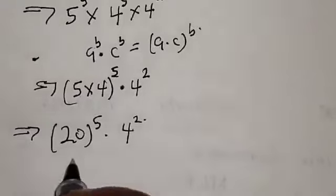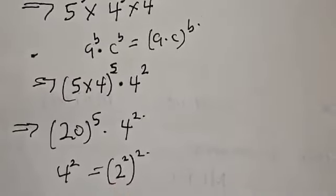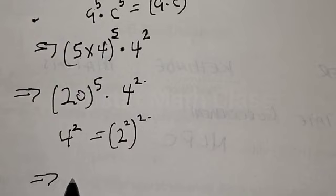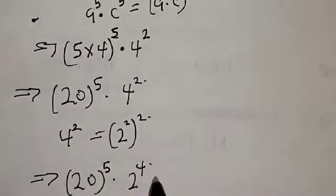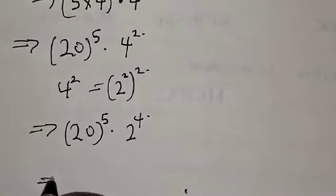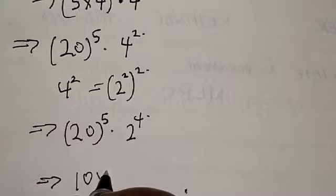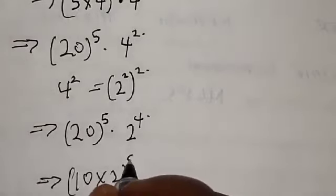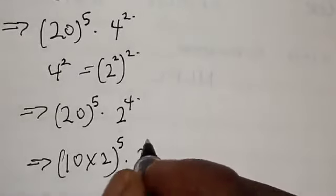And 4 squared can be expressed as 2 raised to power 2, squared, which equals 2 raised to power 4. Also, 20 can be expressed as 10 times 2, so we have 10 times 2 raised to power 5, multiplied by 2 raised to power 4.